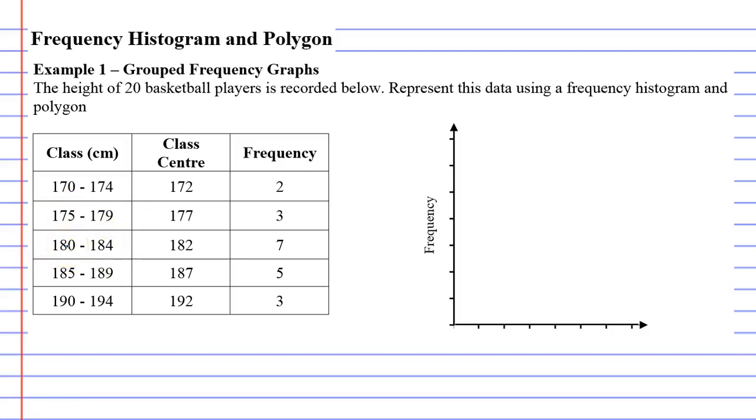Now you've got a couple of options here, and I'll show you the option that I don't like first just because it takes longer and it's harder to fit in. You could say this line here is going to be 170 to 174, that's the interval we're going to use there. But I don't like that because it's really cramming things in there. Instead, we can use our class center.